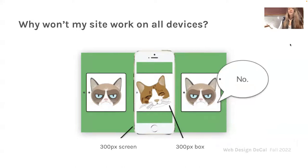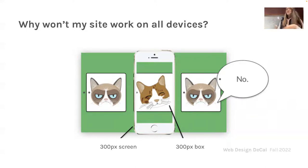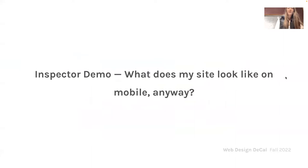Here's a funny example of how things get cut out when you decrease the width of a device. On a 300-pixel screen with a 300-pixel box, two of the three kittens get left out if we don't make things shift around. So what does my site actually look like on mobile? There are many elements to play with — titles, text, transitions, layouts, etc.